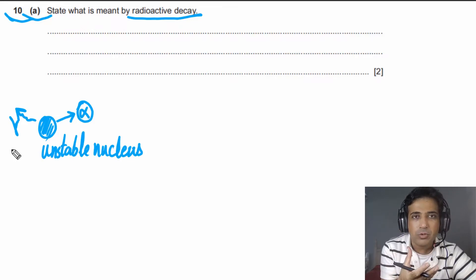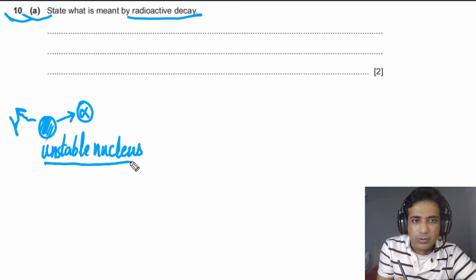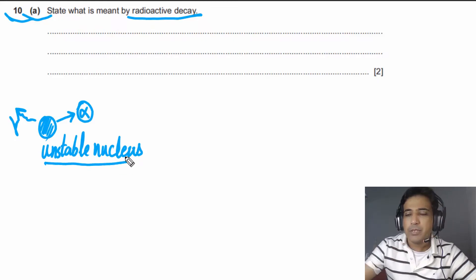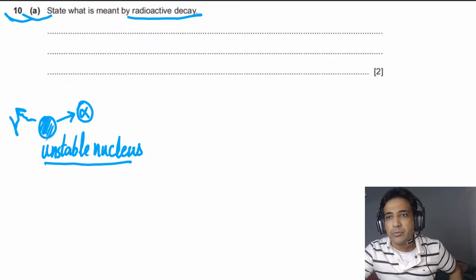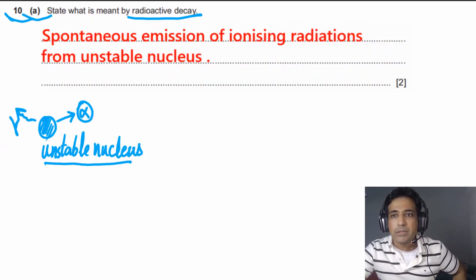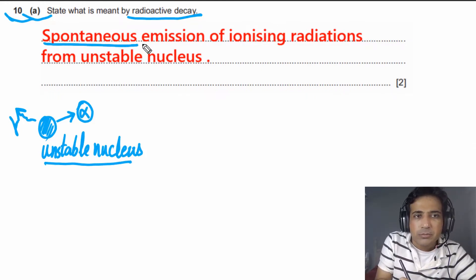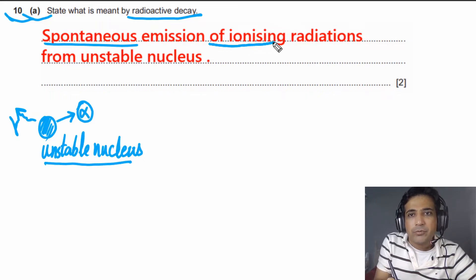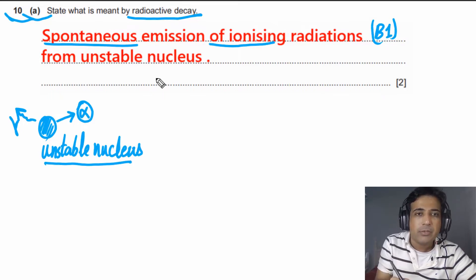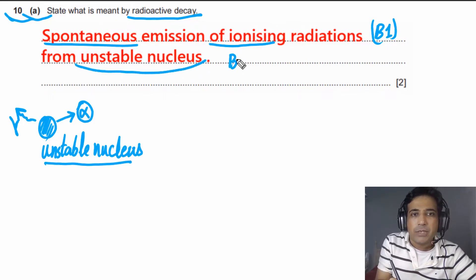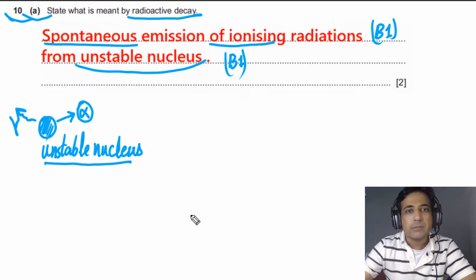The spontaneous emission of nuclear radiations from an unstable nucleus is called radioactive decay. This question has two marks. You will get the first mark for writing 'spontaneous emission of ionizing radiations,' and the second mark for writing 'unstable nucleus.'